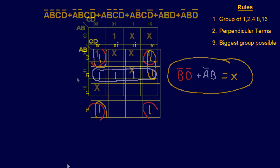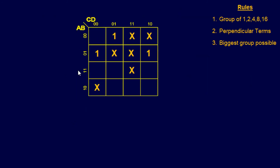Let's do one more problem. For this last example we're going to tackle something a little different — looking at don't cares and understanding the groups. The good news about don't cares is you can use them any way you want: use them to create a group, ignore them, or use them to expand your minterms or maxterms. The goal is to use don't cares to make the biggest group possible. We still need groups of 1, 2, 4, 8, and 16 that are perpendicular and as large as possible.